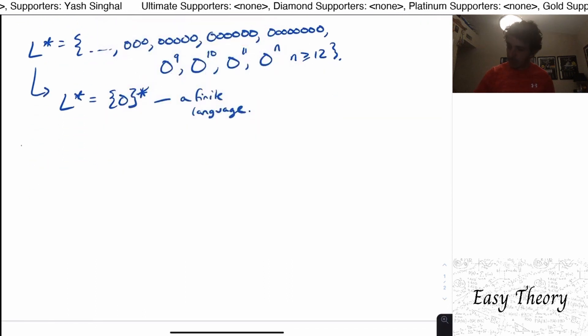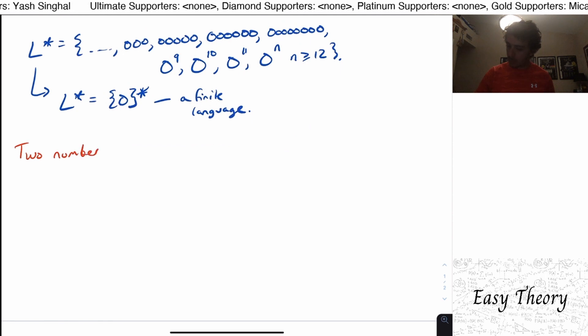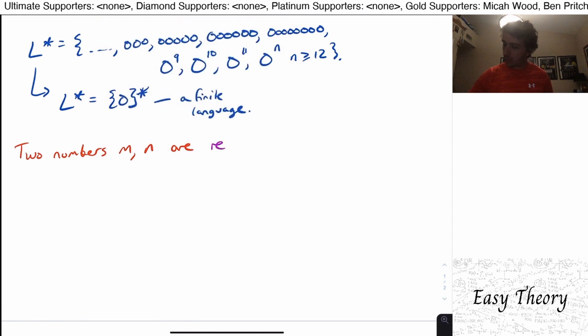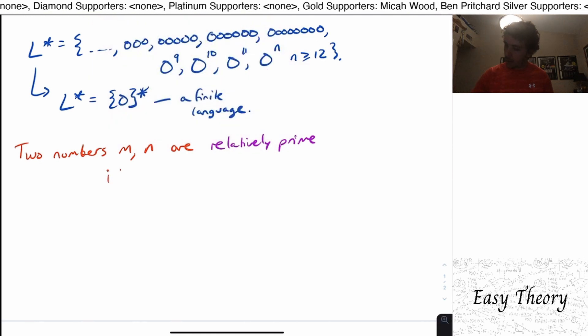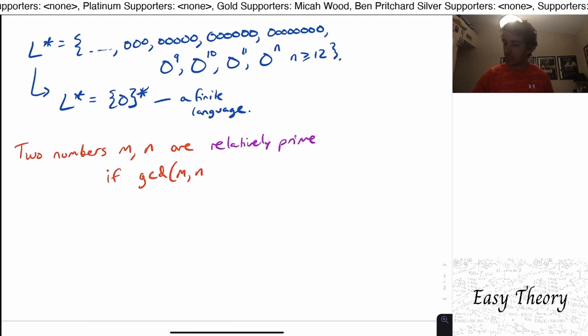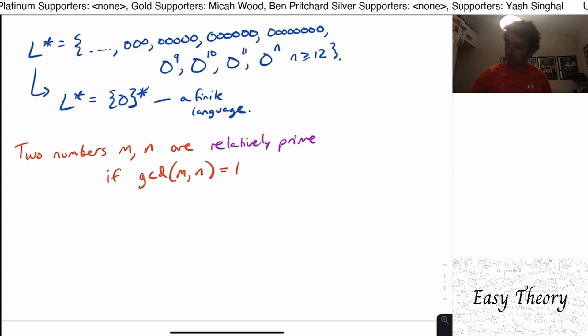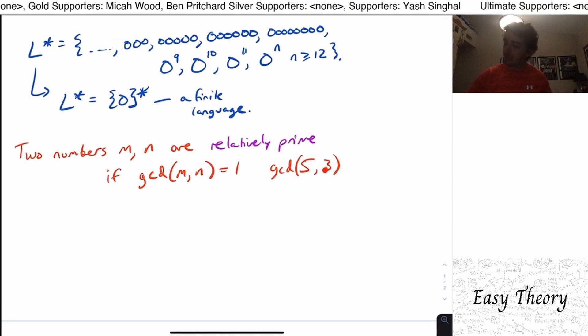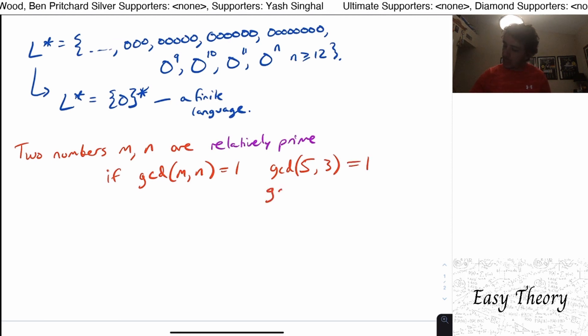So we say that two numbers are relatively prime if the biggest thing that divides both of them is one. So for example, the five and the three example that we had before. The GCD of five and three, well, what's the biggest thing that divides both of these? Well, they're both prime. They just happen to be prime. So the biggest thing that divides them is one.